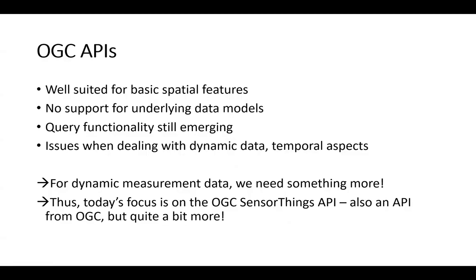Each of these API services has a minimal core of what must be done, with extensions available for additional functionality. The OGC APIs are well suited for basic spatial features. What they're missing is support for more complex underlying data models — the query functionality is still being defined and there are still issues when dealing with dynamic data. That's why we have been focusing on the OGC SensorThings API, which has far more powerful query logic.